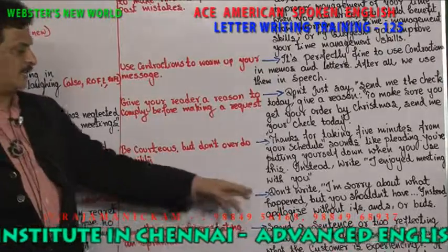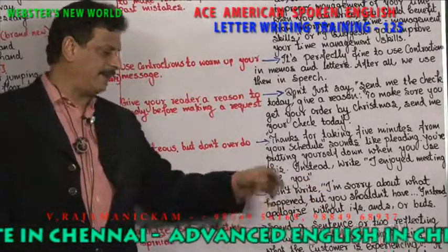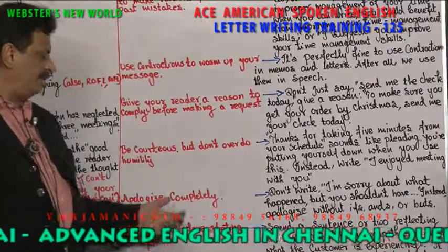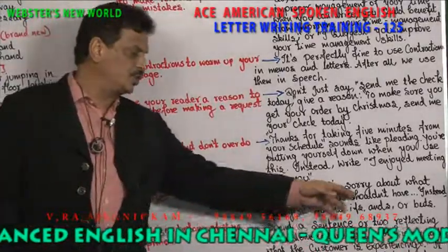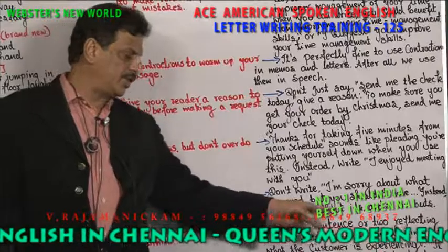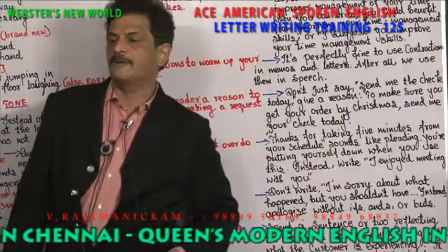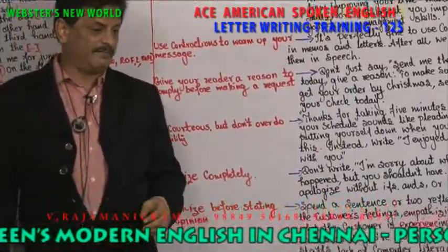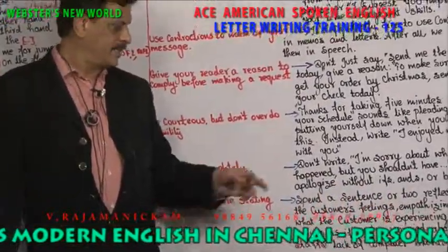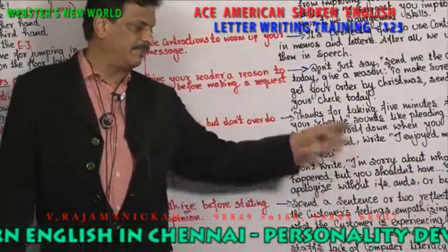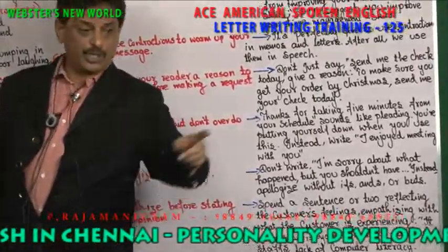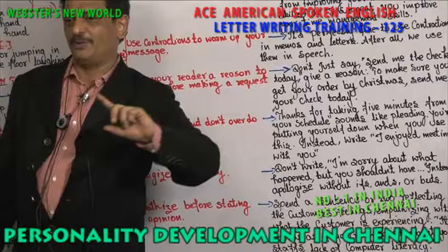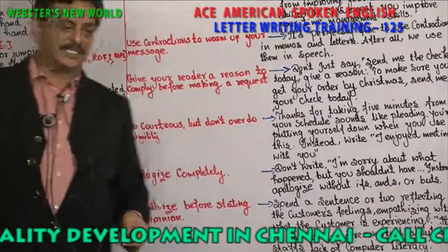Apologize completely. Don't write 'I am sorry about what happened, but you shouldn't have.' There should be no 'if' conditions or 'buts' when you are apologizing. You should apologize without ifs and buts — a complete, unconditional apology.